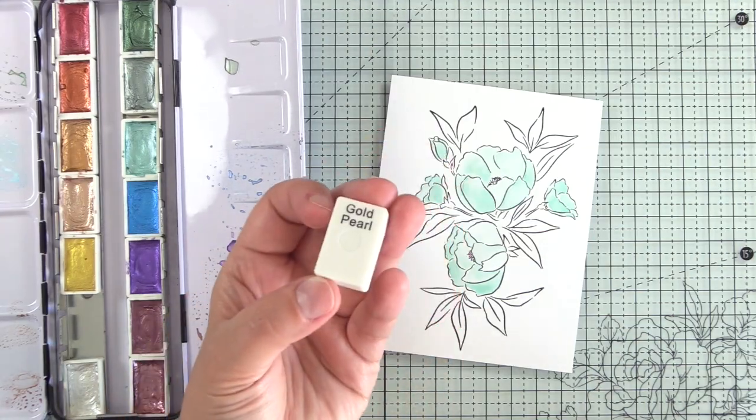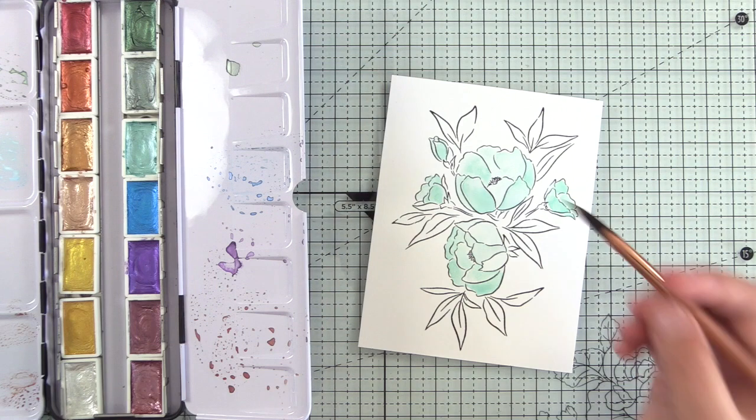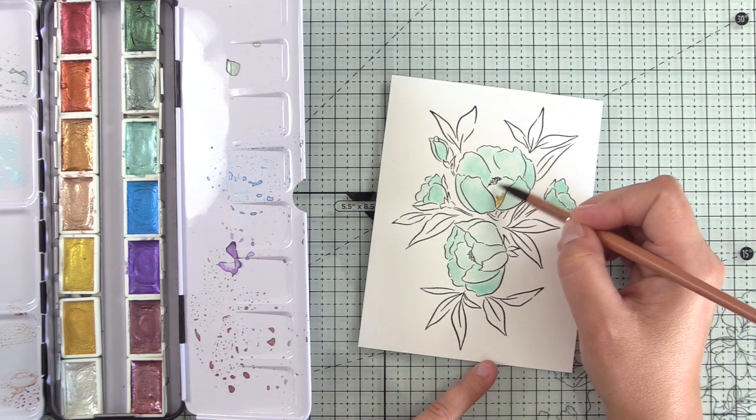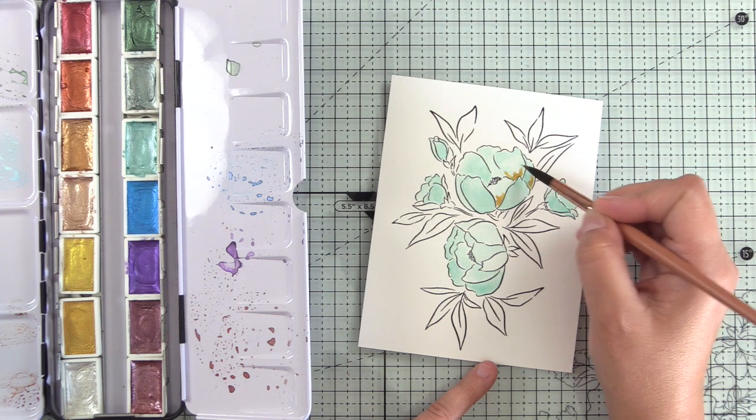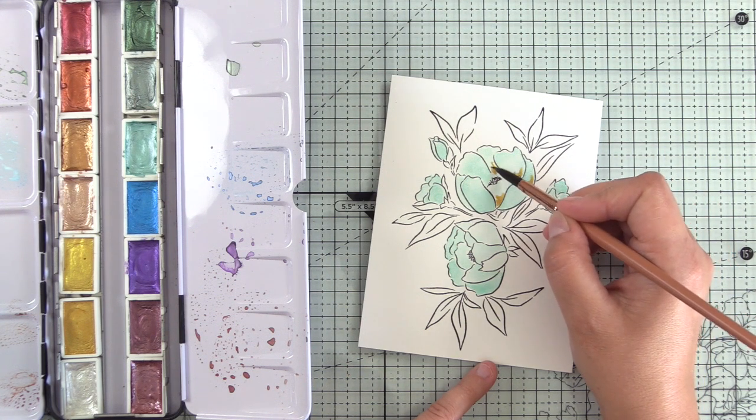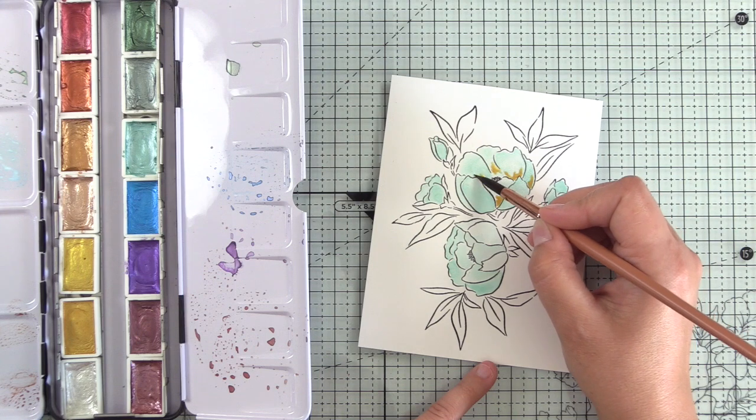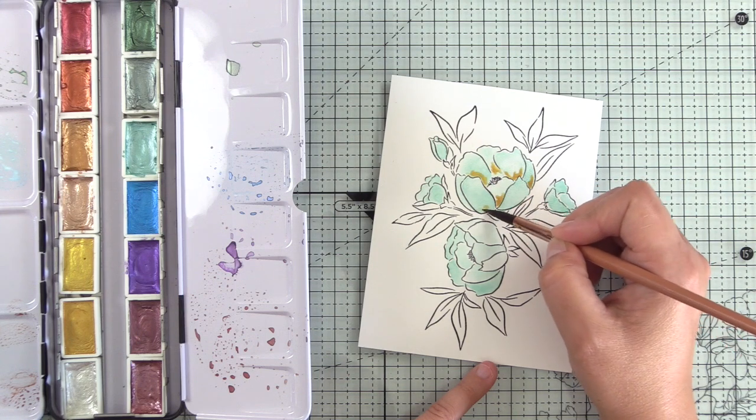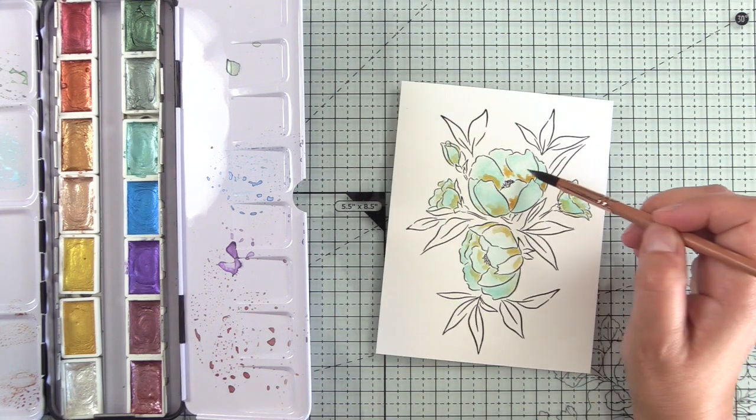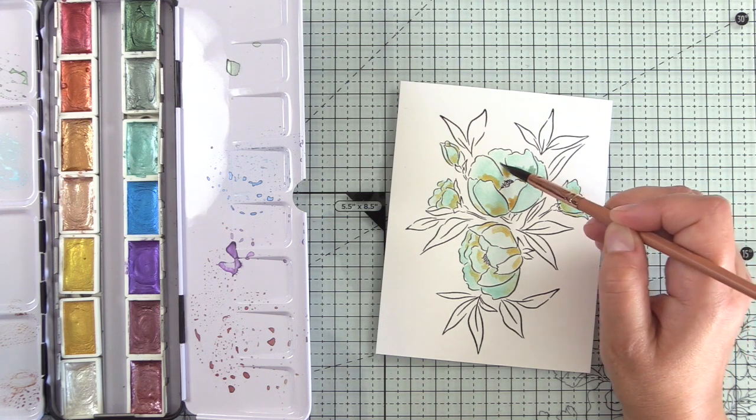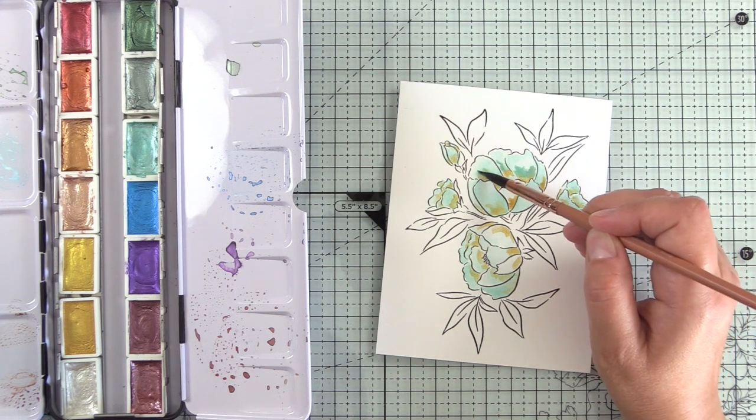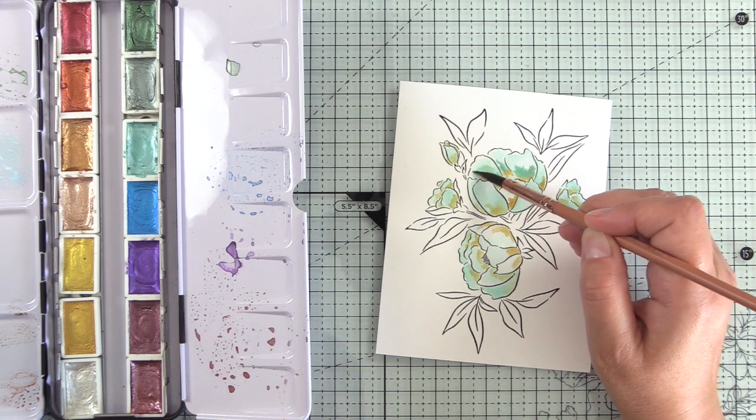As those dry a little bit, I'll come in with the gold pearl watercolor and same thing, only this time I'm going to use the gold pearl as my shadow color. So I'm only dropping it at the base and you can see that I have a fairly pigmented mixture of it on my brush, less water with this compared to the first coat with the aquamarine. Then I'll come in with a little bit higher pigmentation of the aquamarine and kind of blend out that edge.